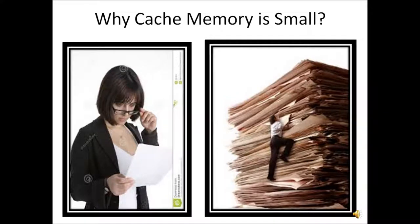In this video we are going to see why cache memory is small. From the image you could find that searching something in a small piece of paper is easier than searching in bundles of paper. That's the basic idea why cache memory is always kept small. If you take main memory, that is like a bundle of papers, cache memory is just like a small piece of paper. As long as your cache memory is small, the search is going to be very simple and easy, and that's why cache memory is always kept small.